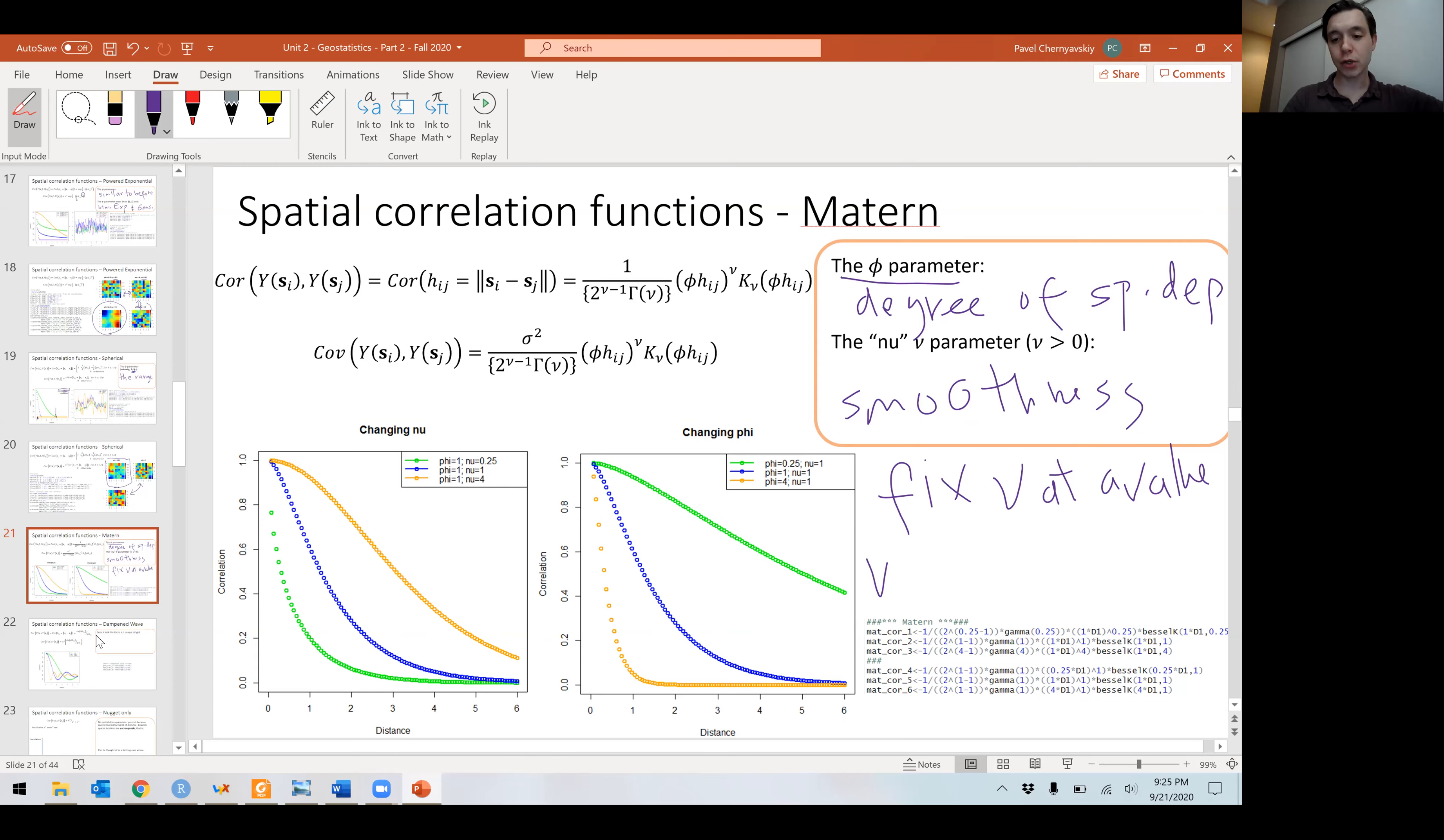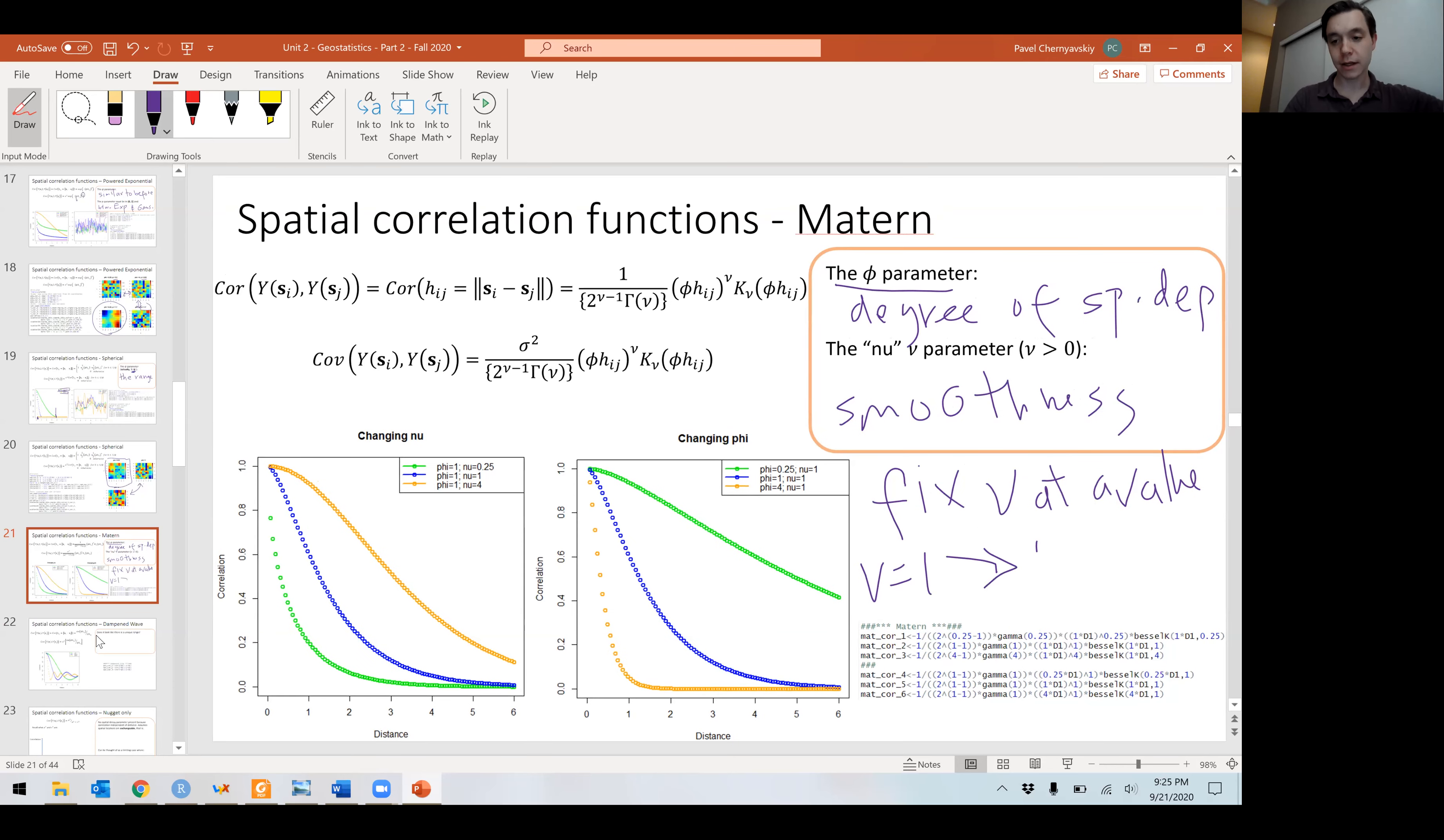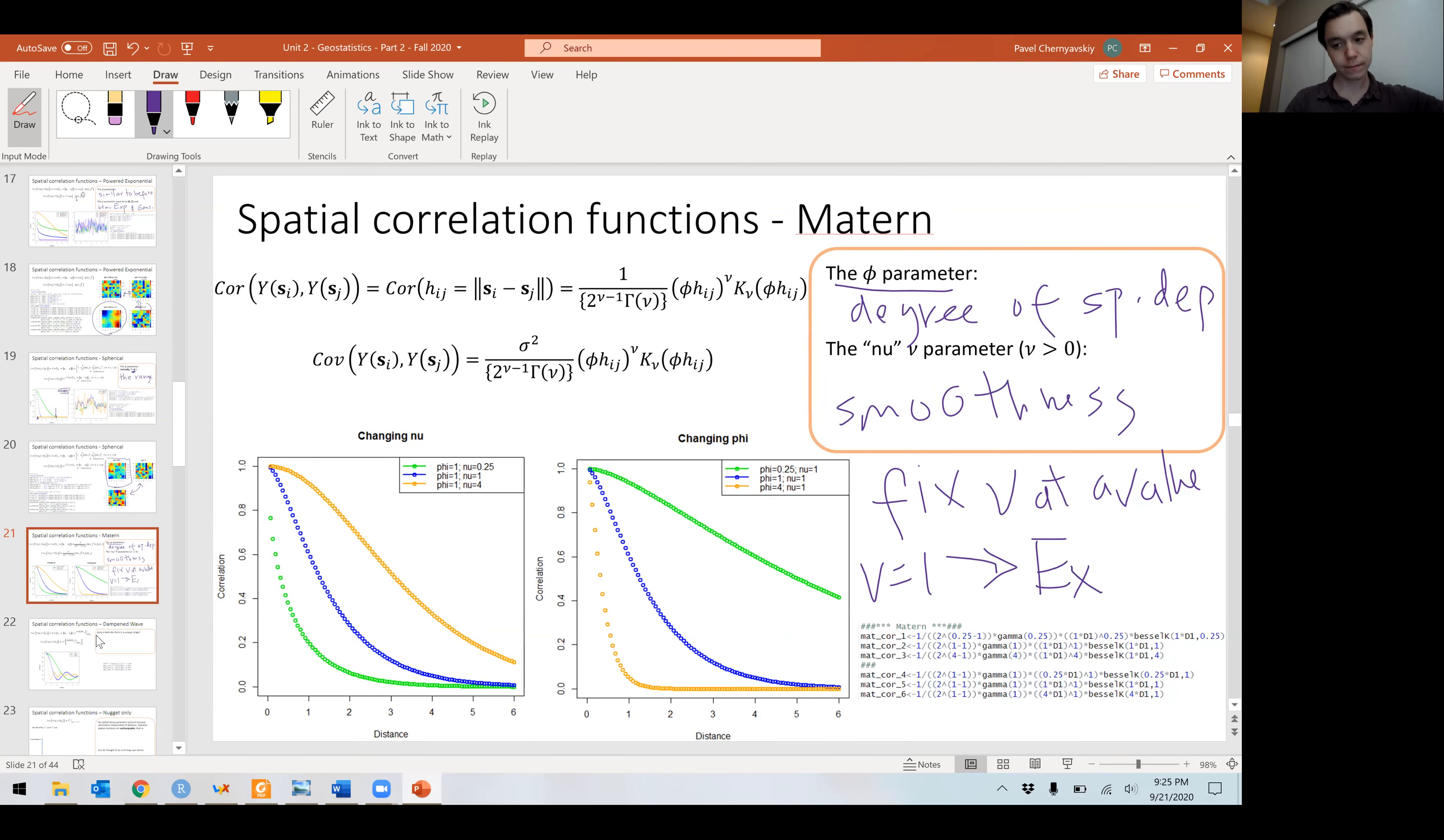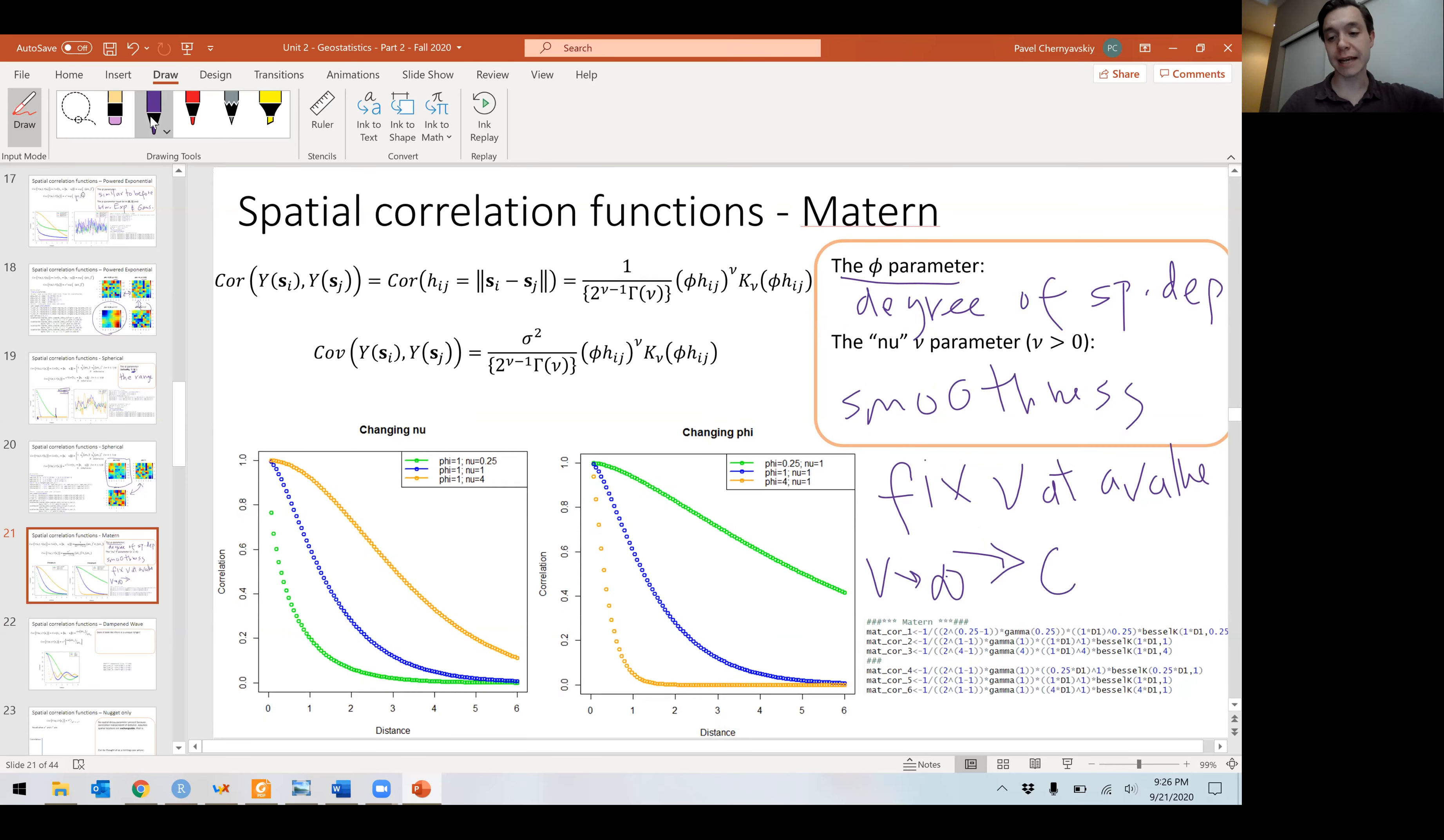And in fact, when nu equals one, we retain the exponential correlation function. And when nu goes to infinity, so as our Matern becomes infinitely smooth, our Matern approaches the Gaussian.